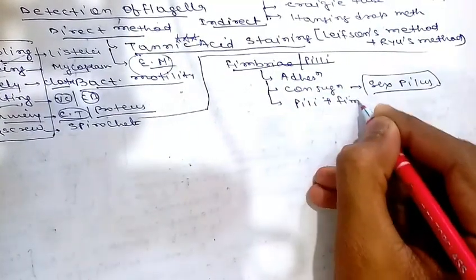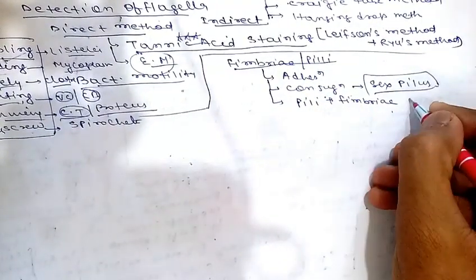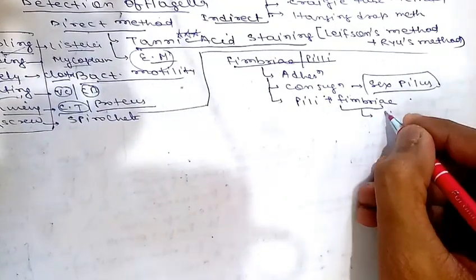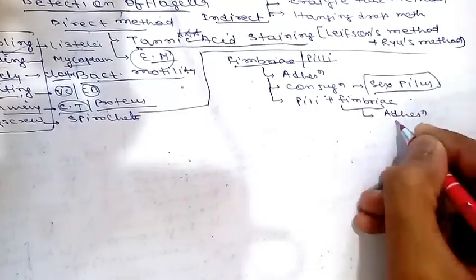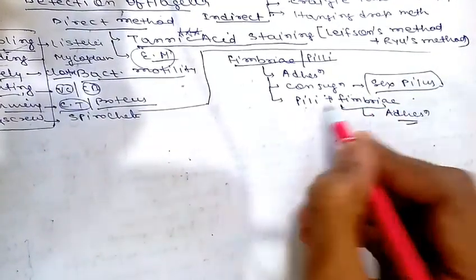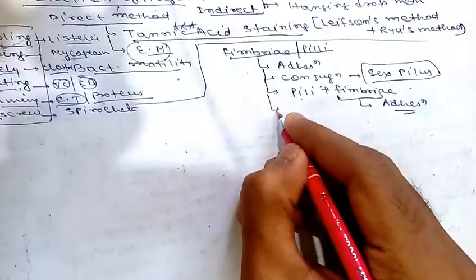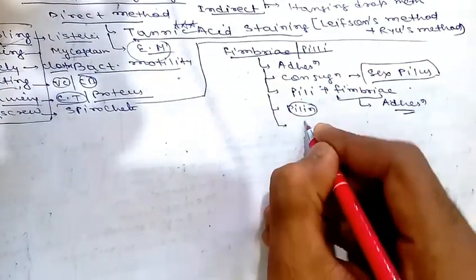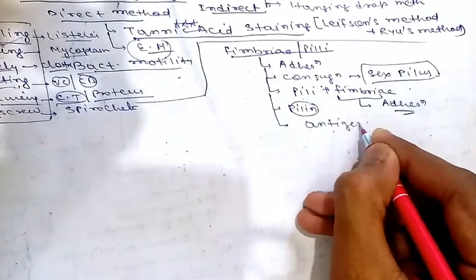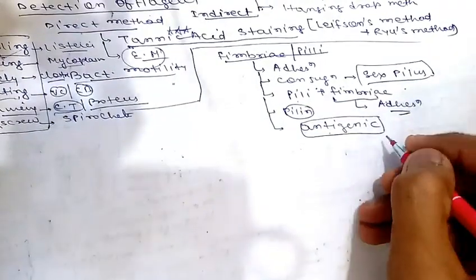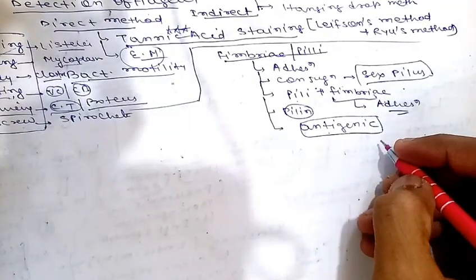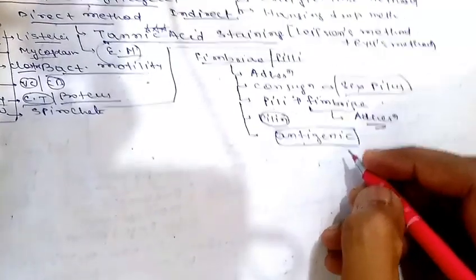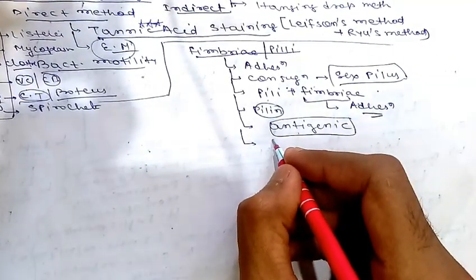Although the terms pili and fimbriae are used interchangeably, in the true sense fimbriae are the type of pili that help in adhesion. Pili are made of a protein called pilin (whereas flagella are made of flagellin). Pili are antigenic in nature; however, antibodies against pili antigens are not very protective.